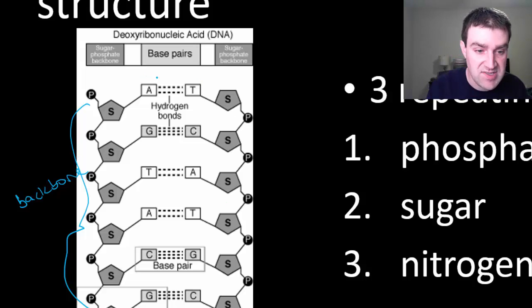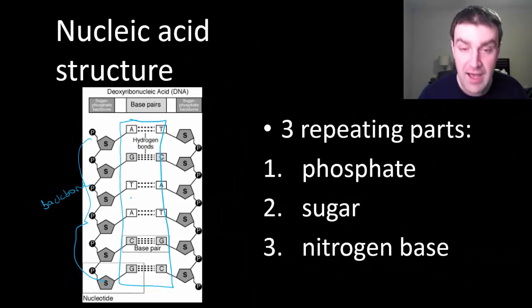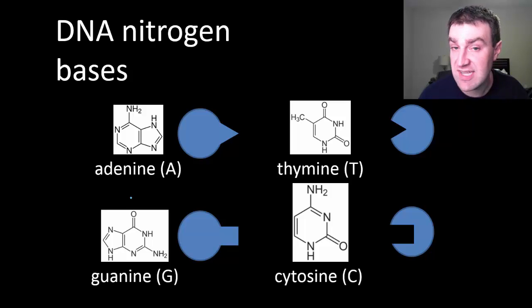It's the nitrogen bases in the middle, though, that are really the coding pieces. And so that's what we're going to spend a lot more time talking about now. In DNA, there are four different types of nitrogen bases.